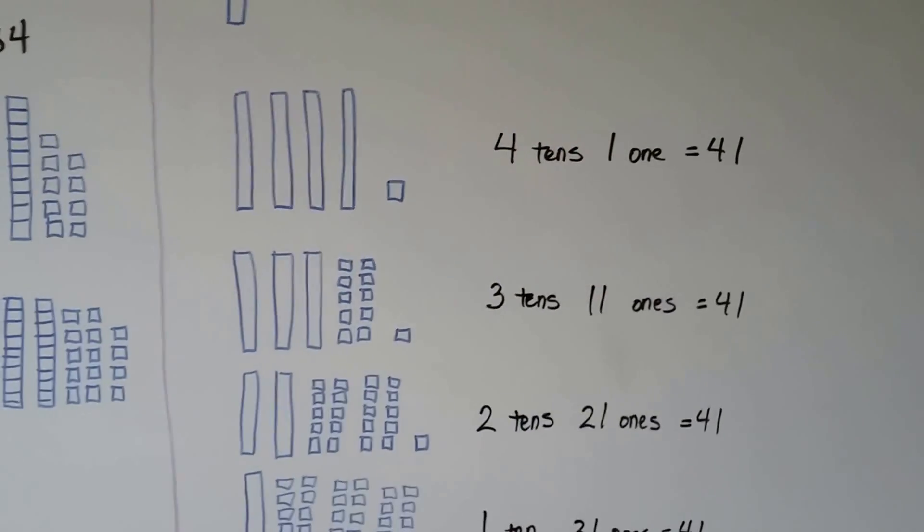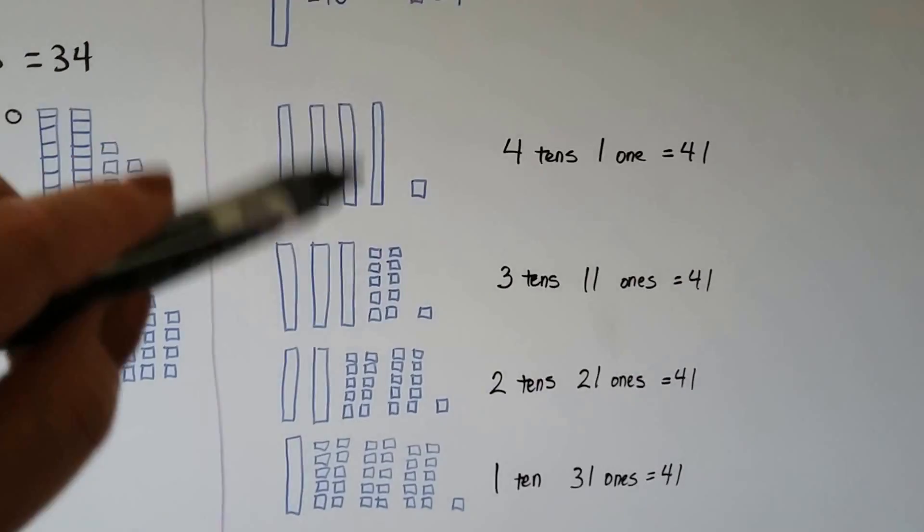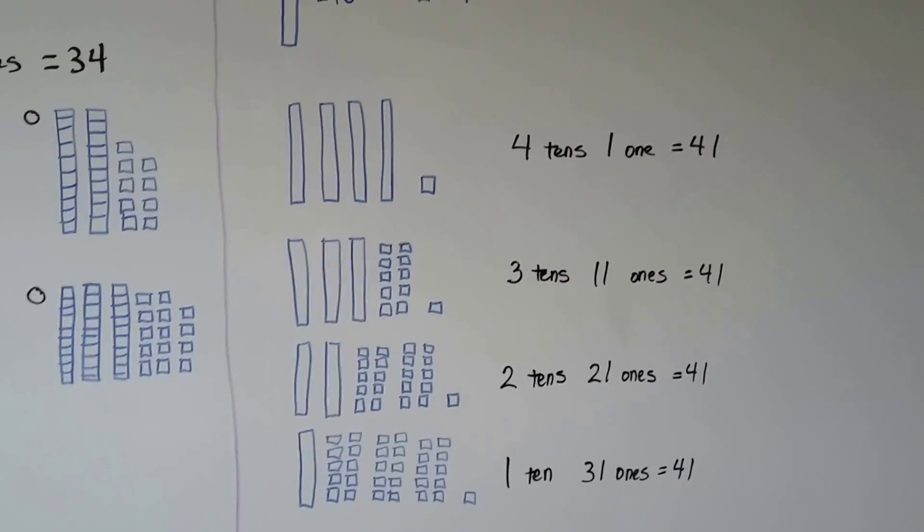So we can show a number in other ways by taking one of the rods of 10 and breaking it into ones.